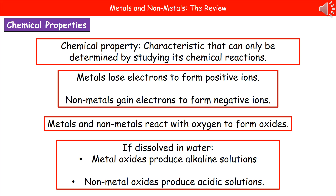One of the properties we need to understand is that when we're talking about metals, they will lose electrons and therefore form positive ions, and non-metals will be likely to gain electrons and form negative ions.